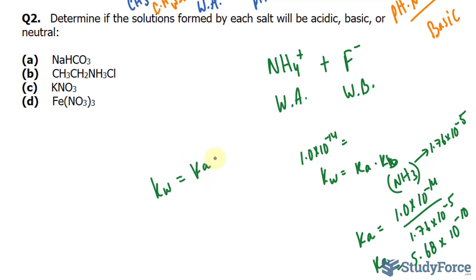Kw is equal to Ka times Kb. Again, 1.0 times 10 to the power of negative 14 is equal to the Ka of HF times Kb. The Ka of HF for hydrofluoric acid is 3.5 times 10 to the power of negative 4. Dividing both sides by this value, we should end up with a Kb value equaling 2.9 times 10 to the power of negative 11.